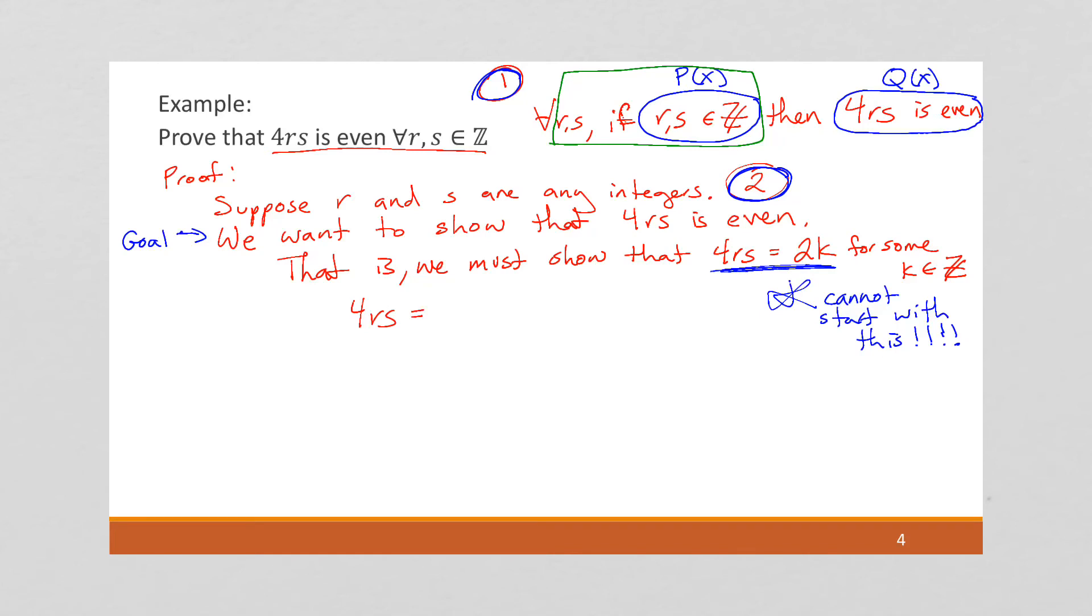So what can I do with 4rs? Well, I can pull a 2 out, so I'm going to factor this 4 into 2 times 2, and we still have our r and our s. So why can I do that? Remember, you want to ask every step, why can I do this? Because of algebra. Give a justification for everything you do. Well, looking at this, it looks like if I could somehow show that that's an integer, I would have my 2 times some integer.